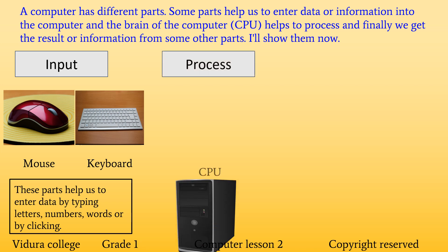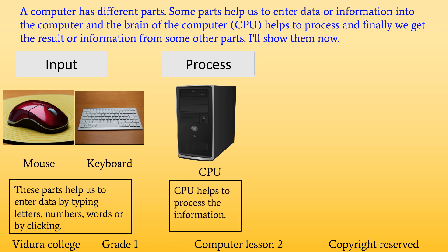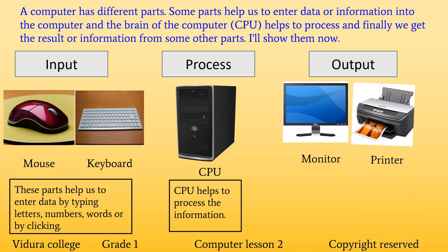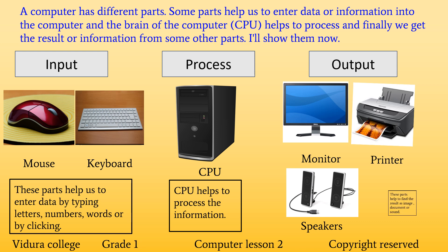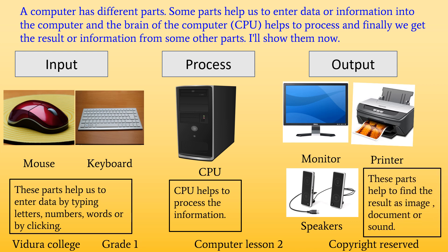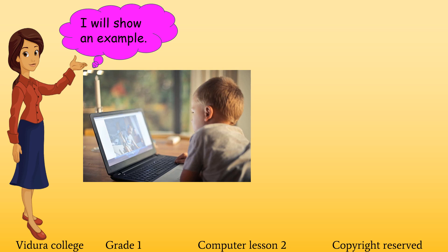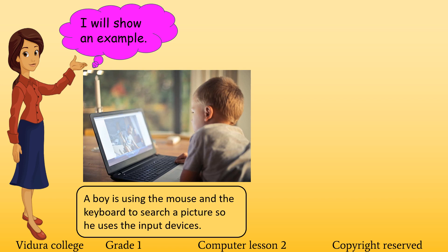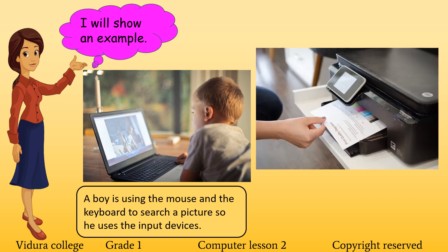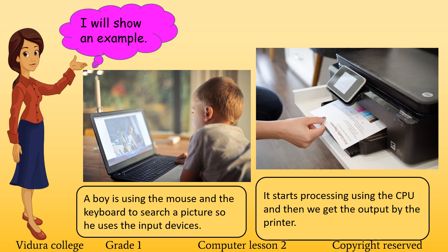Process: CPU. The CPU helps to process the information. Output: Monitor, Printer, Speakers. These parts help us to find the result as image, document, or sound. For example, a boy is using the mouse and the keyboard to search a picture, so he uses the input devices. Then, to take the picture out from the computer, the CPU starts processing and we get the output by the printer. We call them printouts.